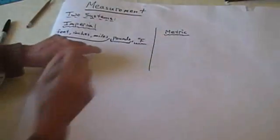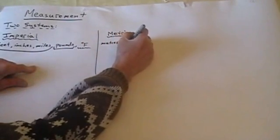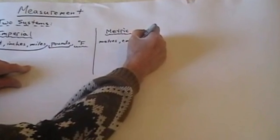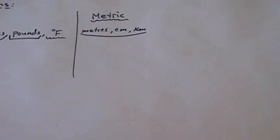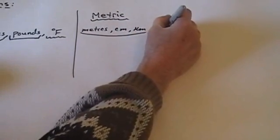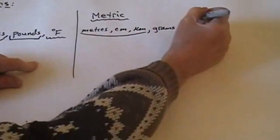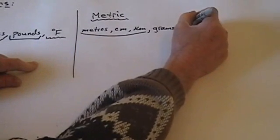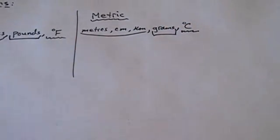If we go to the metric system, we might have units of meters — spelled with R-E-S, the French way — centimeters, and kilometers, all measures of length. In the metric system, they don't use pounds; they use something called grams, and scientists would refer to that as mass. And for temperature, we use degrees Celsius.